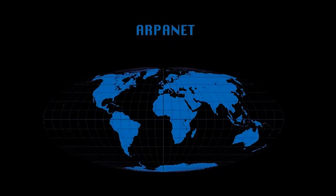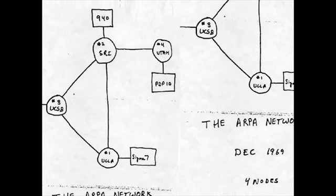In 1969, packet switching technology was introduced in the US Defense Department's ARPANET computer network. Its first node was deployed at the University of California, Los Angeles, in September, with nodes at three more universities by the end of the year.